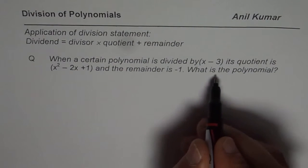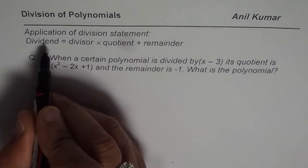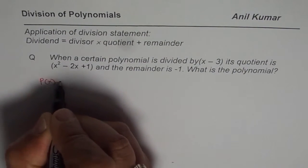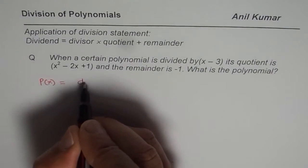So basically what we are given here is we need to find the polynomial which is the dividend. So we say let the polynomial be p of x. In that case the polynomial is divisor d of x,